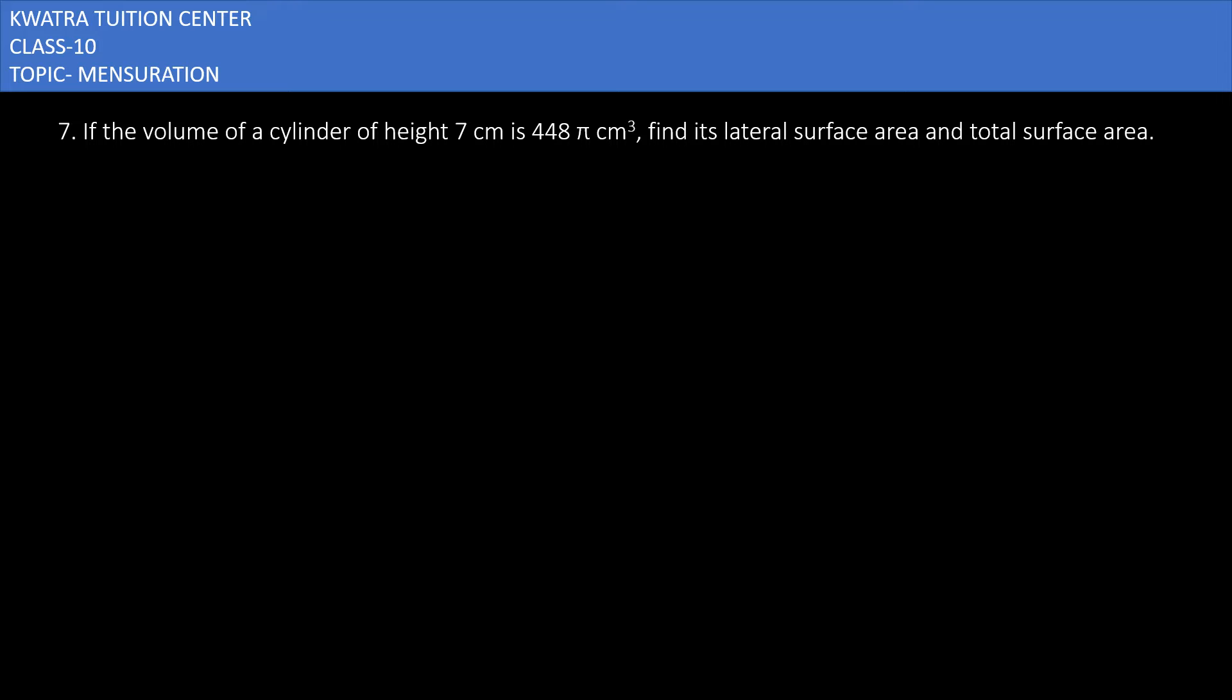Question number 7 says that the volume of a cylinder of height 7 cm is 448π cm³. Find its lateral surface area and the total surface area.